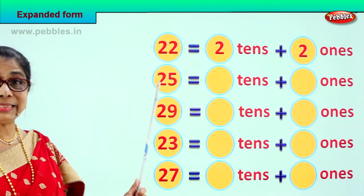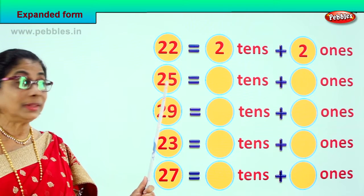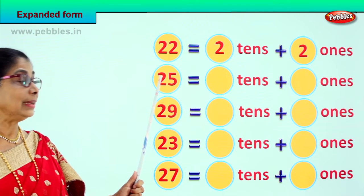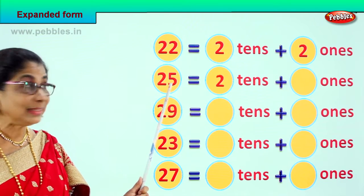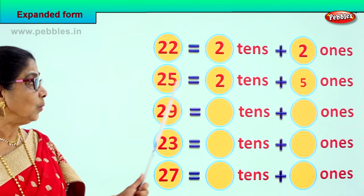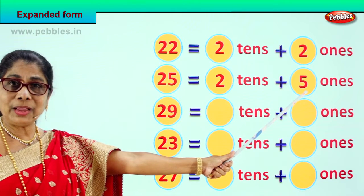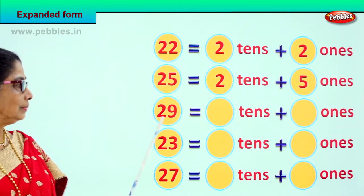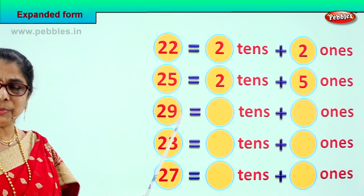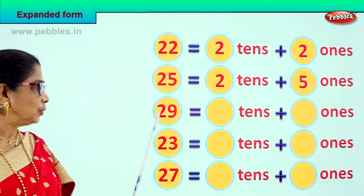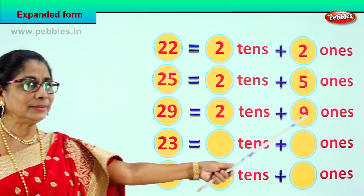Now the next number is 25. How many ones? How many tens? 2 tens, 5 ones. Good. Next: 29. How many tens? How many ones? 2 tens, 9 ones. Good.